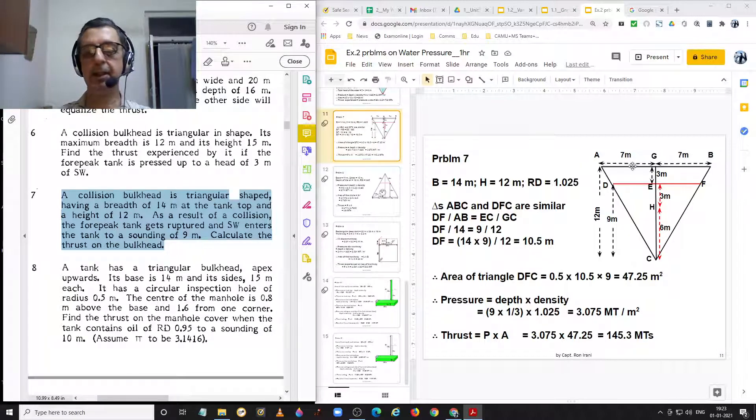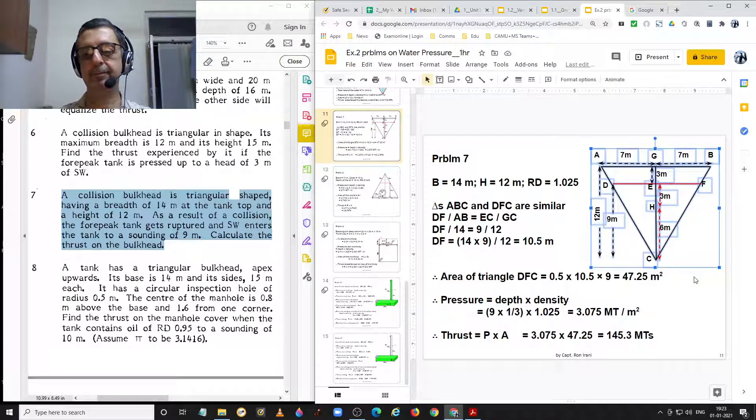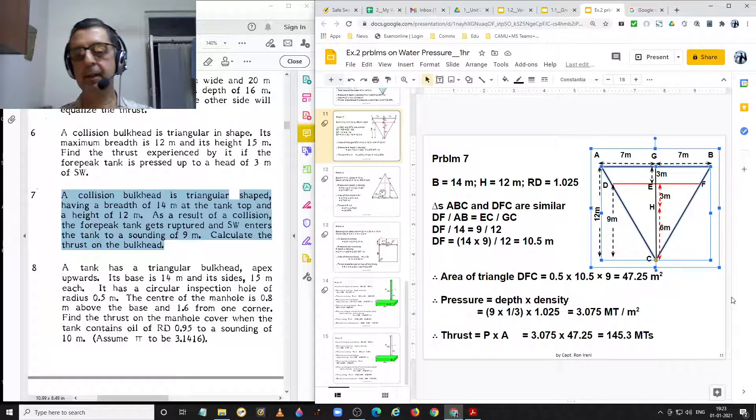So AB is 14 meters and the depth of the tank is 12 meters. The ship suffers a collision and salt water enters the phobic tank up to a height of 9 meters. That is until this red line. So let's see how we can go about solving this problem.